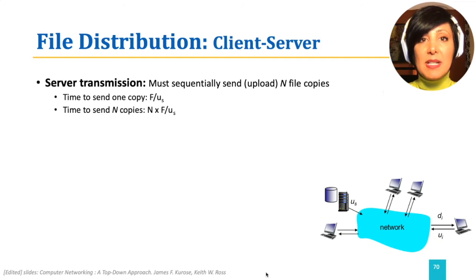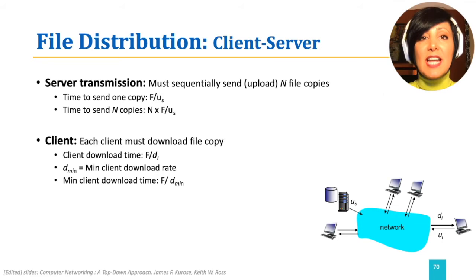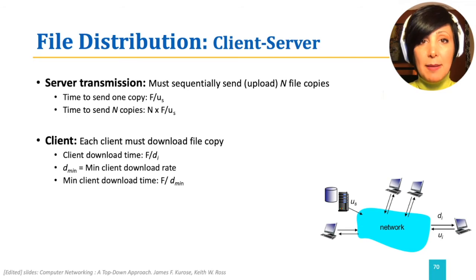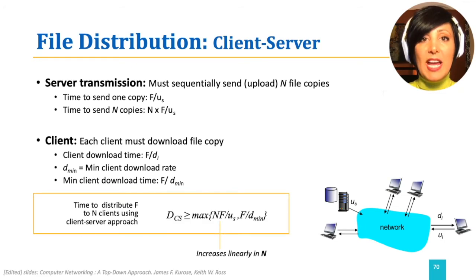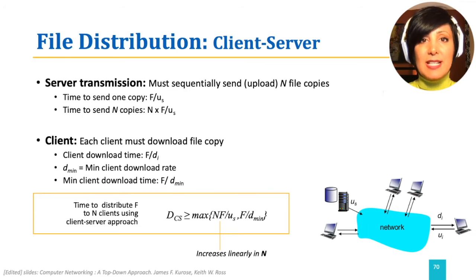Each of the N clients must download the copy sent by the server. The time for client I's download is F divided by DI. Among all clients, the slowest client will take the longest time, which belongs to the client with minimum download capacity D min — that time is F divided by D min. So the total time to distribute file of size F to N clients using client-server approach is lower bounded by the maximum of N times F divided by US, which increases linearly in N, and F divided by D min.